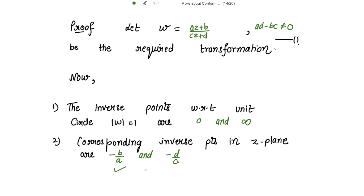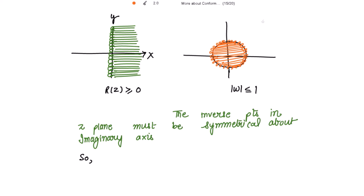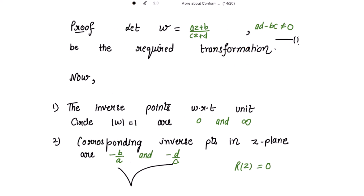Because these two are the inverse points, they must be symmetrical about the imaginary axis. In the z-plane, it is given that Re(z) ≥ 0, which means this region including the imaginary axis. And mod w ≤ 1 is this region including the points on the circle. Note that mod w = 1 means points on the circle, and mod w strictly less than 1 means the interior points of the circle. So as these two are inverse points in the z-plane, they must be symmetrical about the imaginary axis Re(z) = 0.